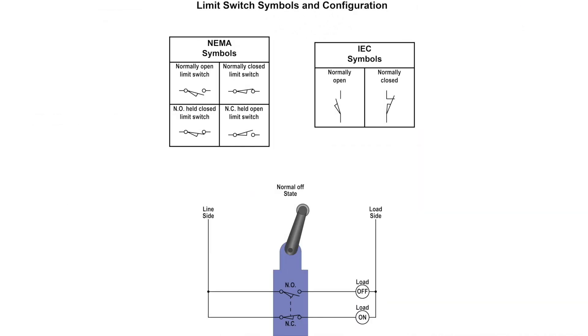In the example, we have displayed the way the limit switch symbols are drawn. They consist of NC, normally closed, NO, normally open, NCHO, normally closed held open, and NOHC, normally open held closed.